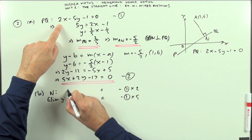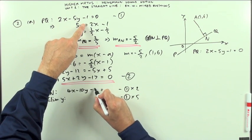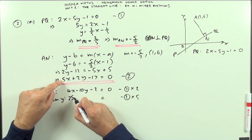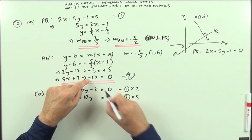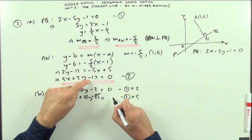So how would they read? 1 times 2. So that would be 4x minus 10y minus 2 equals 0. 5 times 2. That would be 25x. That looks a bit nasty. 5 twos are 10y. 5 of these, but that's going to be minus that. So that's minus 85 equals 0.